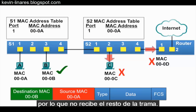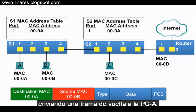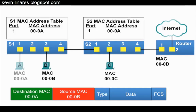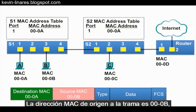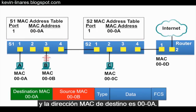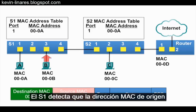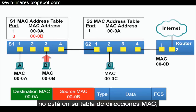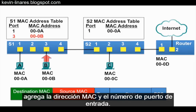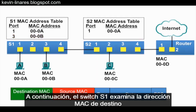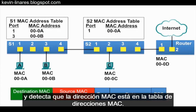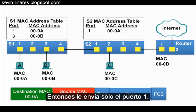Now let's have PCB sending a frame back to PCA. The source MAC address of the frame is 000B and the destination MAC address is 000A. PCB sends it to switch S1. S1 notices that the source MAC address is not in its MAC address table, so it adds the MAC address and the incoming port number. Next, switch S1 examines the destination MAC address and notices that MAC address is in its MAC address table, so it sends it out just port 1.